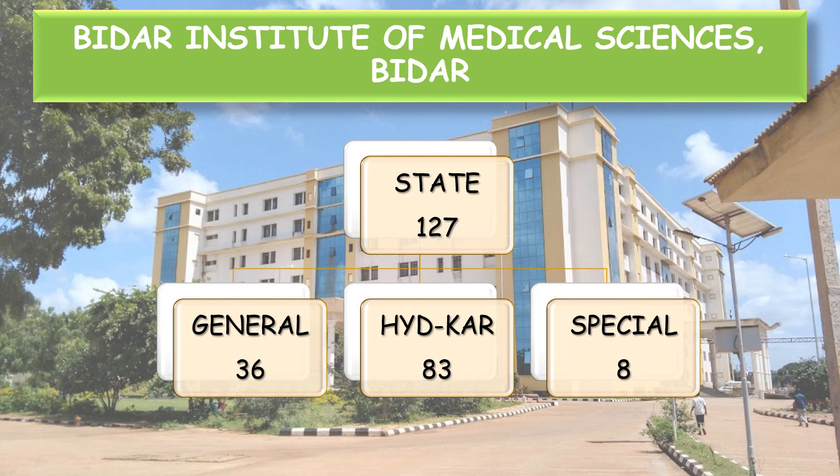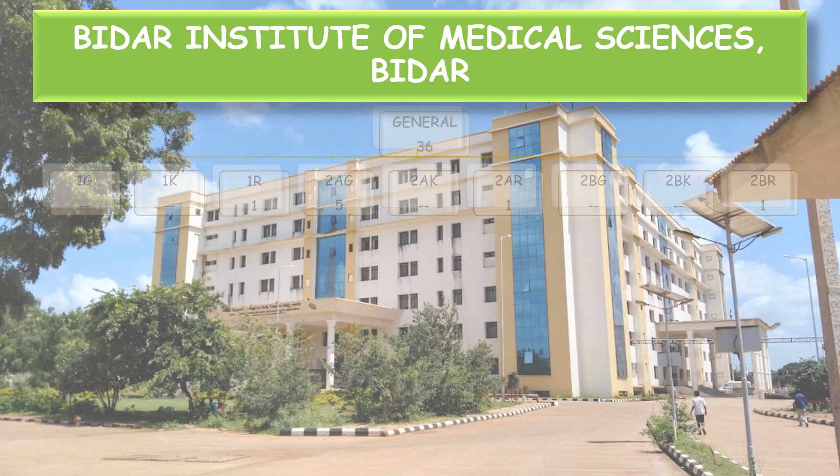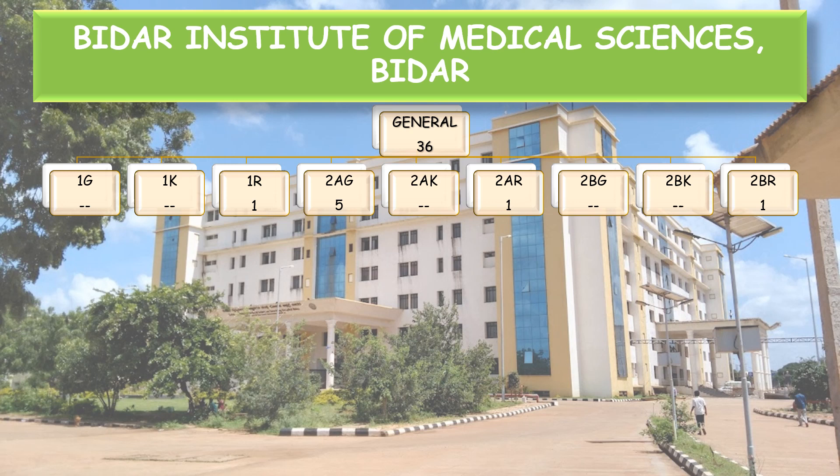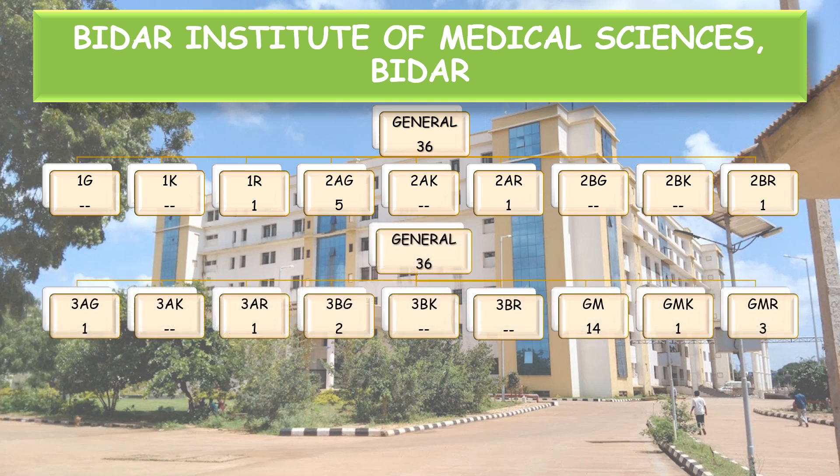State category 127 seats are further divided. General — 36 seats are further divided as follows: 1G — none, 1R — 1, 2AG — 5, 2AR — 1, 2BR — 1, 3AG — 1, 3AR — 1, 3BG — 2, General Merit (GM) — 14.